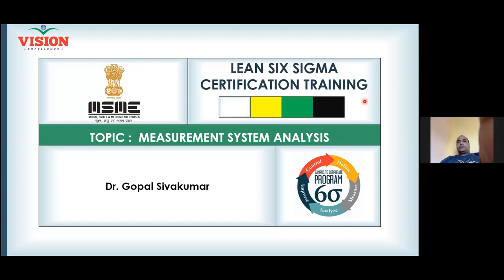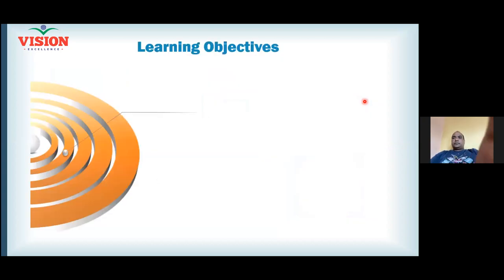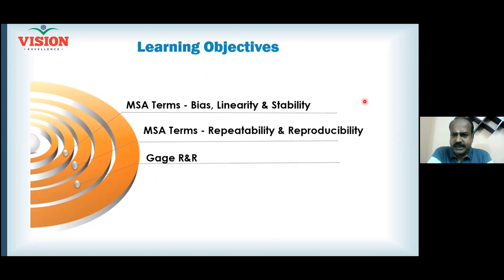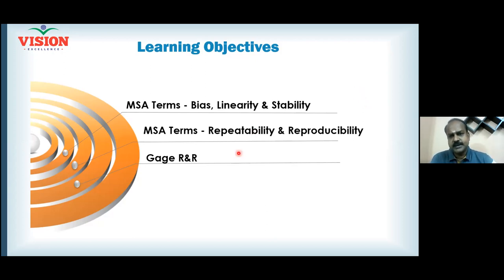In this session we will understand MSA terminology: bias, linearity, and stability. We will also understand repeatability and reproducibility, and a tool called Gauge R&R — Gauge Repeatability and Reproducibility — which helps measure measurement error.